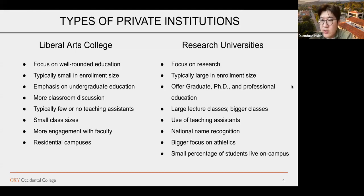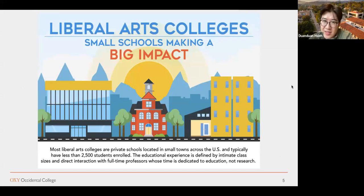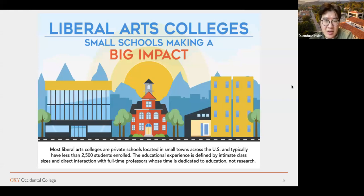Most students who come to liberal arts campuses are undeclared, and you can take courses across all different departments with no distinctions between colleges the way there are at research universities. Research universities also have graduate and PhD students, larger lecture classes — typically 300 to 500 students — and they use teaching assistants to break down those courses. There's a bigger focus on athletics and a smaller percentage of students live on campus. I obviously work for a liberal arts college. I didn't go to Oxy, but I attended a liberal arts college as an undergraduate student.